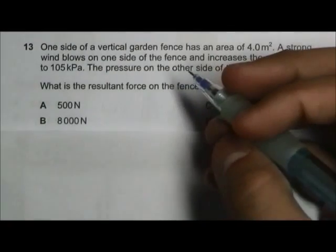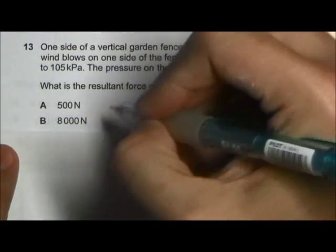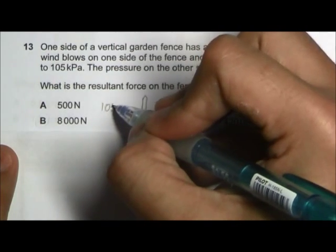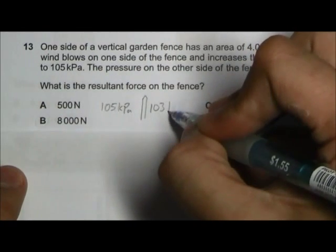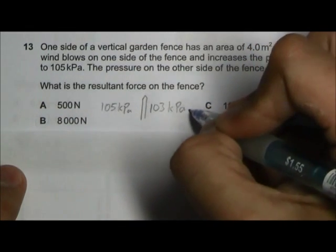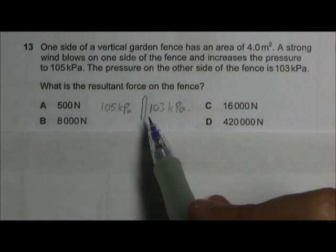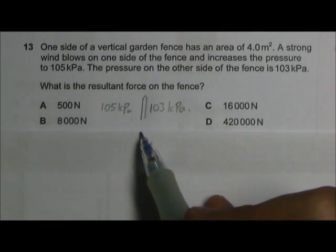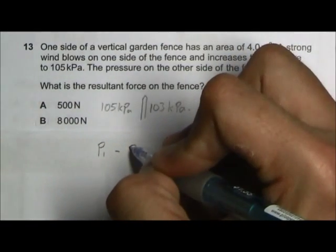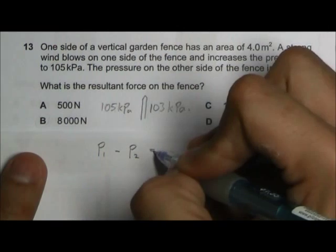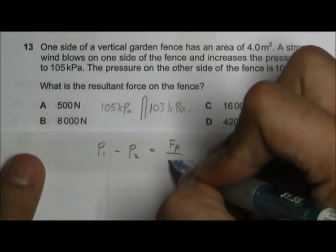Okay, let's draw a diagram to represent the forces. We have a fence in the center. And on one side, we have a pressure of 105 kilopascal. And on the other side, we have a pressure of 103 kilopascal. So the difference in the pressure is going to give us a resultant force per unit area. So the difference in pressure will be pressure 1 minus pressure 2, and this difference in pressure is going to give us a resultant force per unit area.